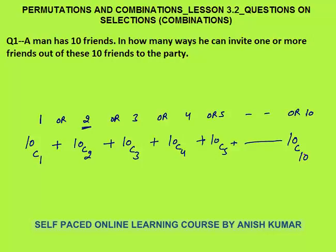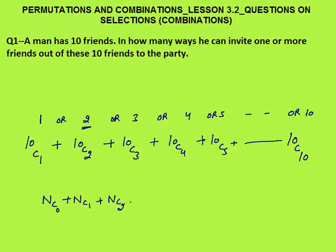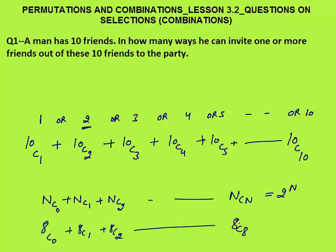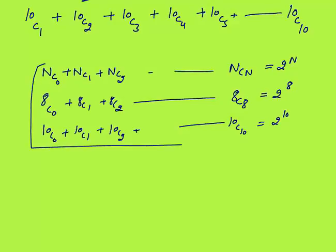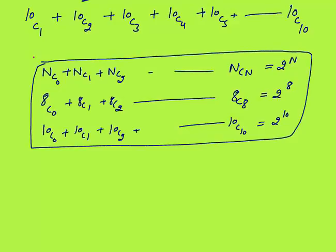Now the problem is how to calculate this large number. We don't need to calculate — there is a basic concept: NC0 + NC1 + NC2 + ... + NCN is always equal to 2 raised to power N. Very important concept. For example, 8C0 + 8C1 + 8C2 up to 8C8 equals 2 raised to power 8. Similarly, 10C0 + 10C1 + 10C2 up to 10C10 equals 2 raised to power 10. So this is the concept that you must remember.